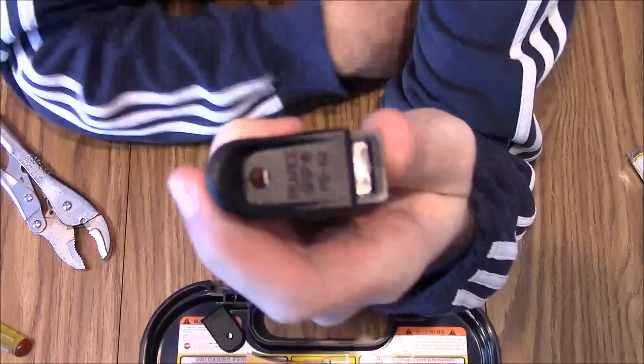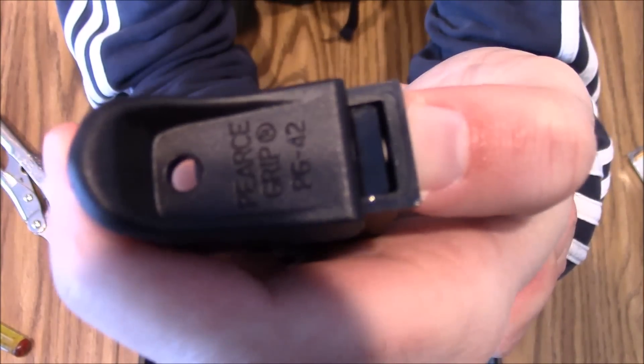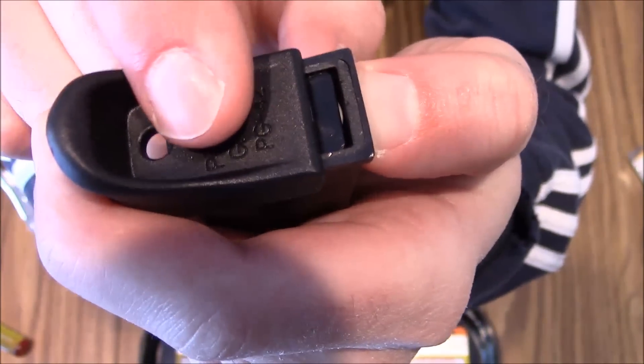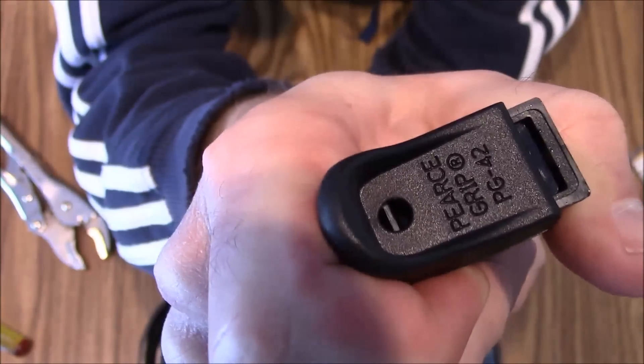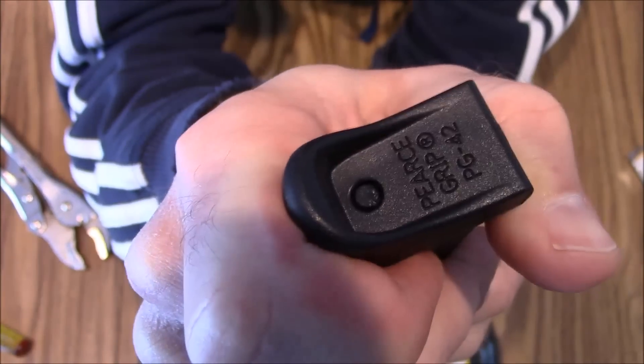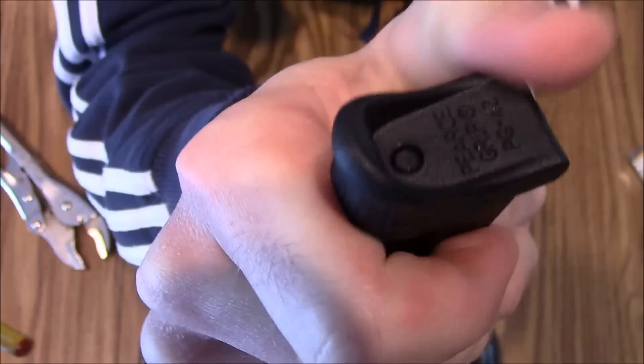Take our extension here, the new extension. Push it on over those two tabs on the side. And then for this to be done correctly, when we push this all the way in, we're going to hear a click, and that's that tab coming through that hole there to show that it's locked. Ready? There it is.